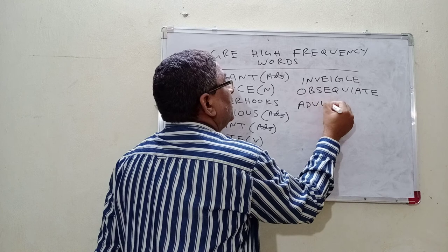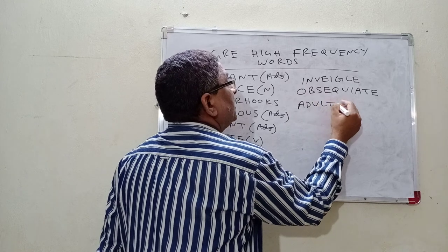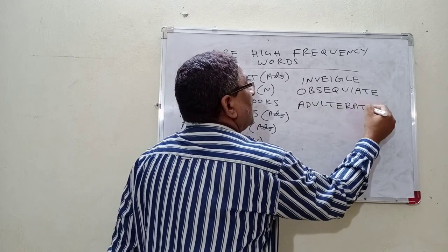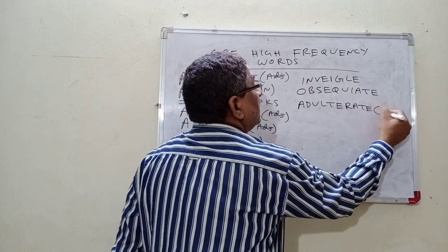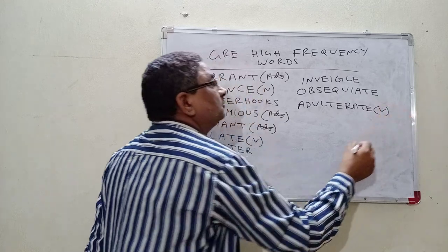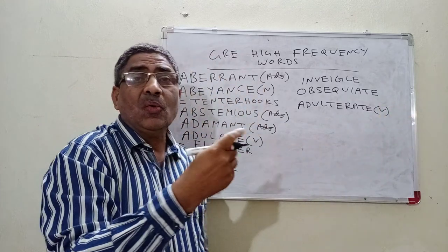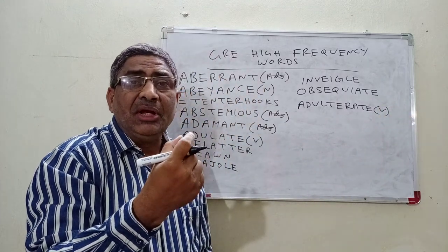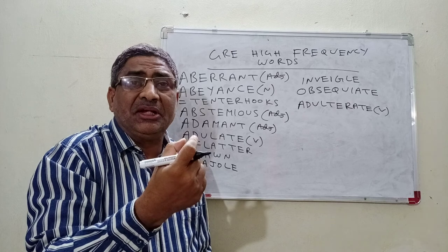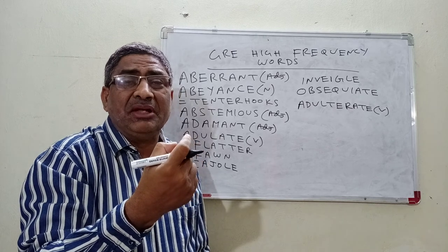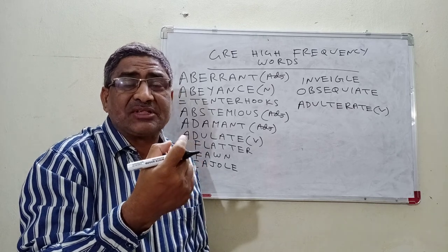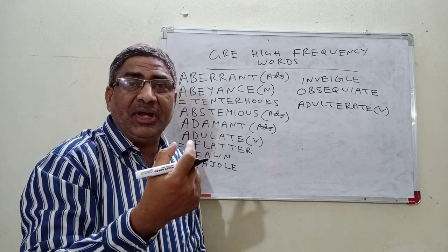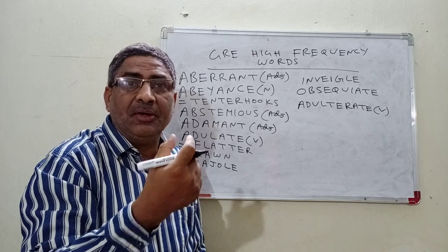Next word: Adulterate. It is a verb form. What is the meaning of adulterate? Adulterate means to contaminate by using many baser substances — to make something impure.